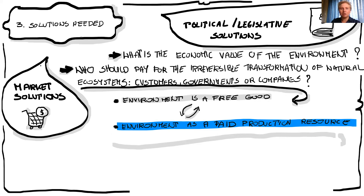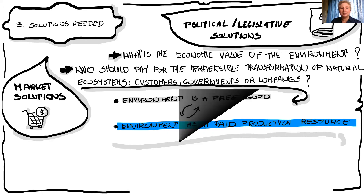We have to change the environment from being seen as a free good into the environment as a paid production resource. So if you do anything on the market, in the economic system, and you use natural components, you have to pay for it. Of course, that's an additional problem, because it's hard to say who is the owner of the environmental goods and services.